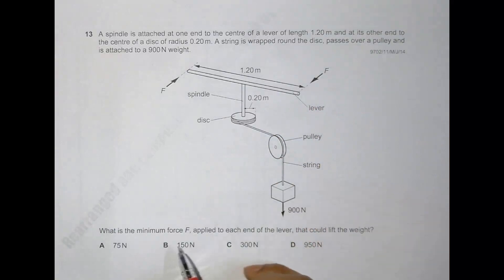And is attached to a 900 Newton weight. What is the minimum force applied to each end of the lever that could lift the weight? We have to calculate the minimum force required.